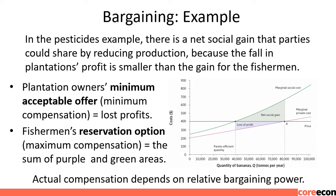Bargaining Example: In the pesticides example, there is a net social gain that parties could share by reducing production because the fall in plantation profits is smaller than the gain for the fishermen. The loss of profits is shown by the purple area on the graph. The total gain to the fishermen is the sum of the green and purple areas, so the net social gain is shown by the green area. The plantation owners' minimum acceptable compensation equals lost profits; the fishermen's maximum compensation equals the sum of the purple and green areas. Actual compensation depends on relative bargaining power.